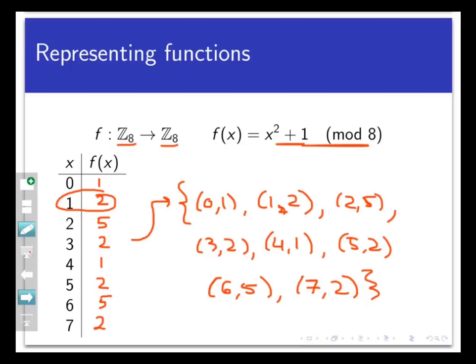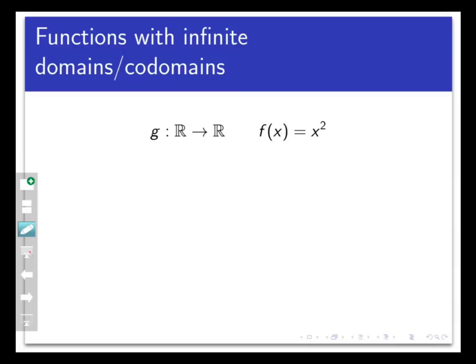Let's try this representation out on another function. Take the function g that maps the real numbers into the real numbers, given by another formula, g of x equals x squared. Now how would I represent this as a set or list of ordered pairs? This time the domain and codomain are infinite, so this will not be a finite set of ordered pairs.